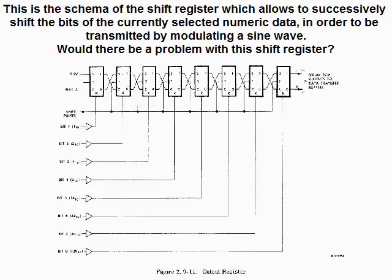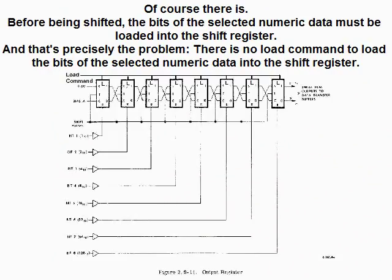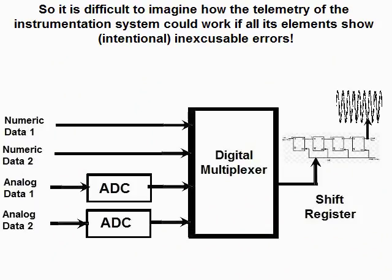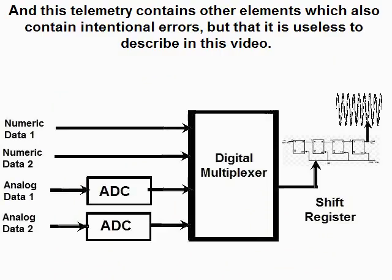This is the schema of the shift register, which allows successively shifting the bits of the currently selected numeric data in order to be transmitted by modulating a sine wave. Before being shifted, the bits of the selected numeric data must be loaded into the shift register. That's precisely the problem — there is no load command to load the bits of the selected numeric data into the shift register. If the bits are not loaded into the shift register, it's not those bits which will be shifted — zeros will be transmitted instead. So it is difficult to imagine how the telemetry of the instrumentation system could work if all its elements show intentional, inexcusable errors. This telemetry contains other elements which also contain intentional errors, but it is useless to describe them all in this video.